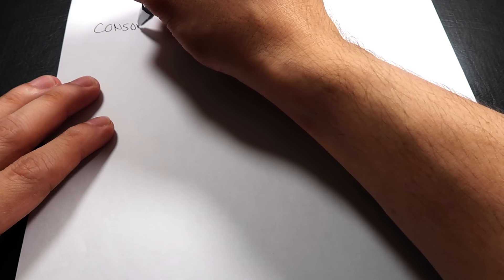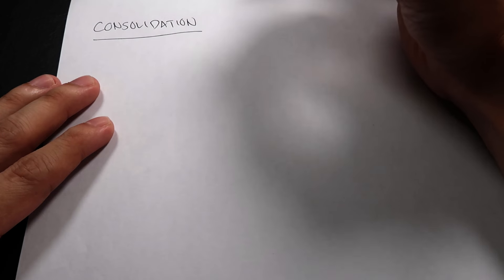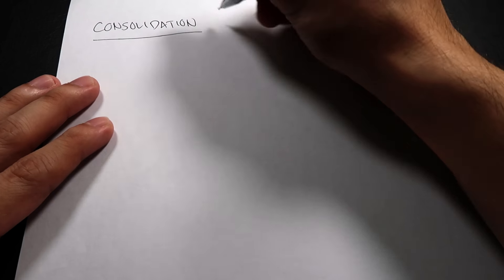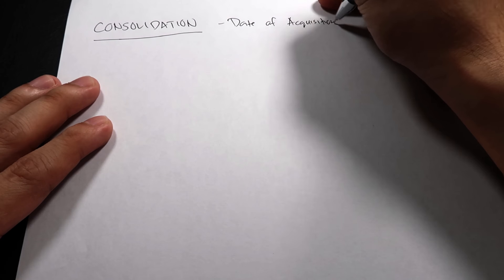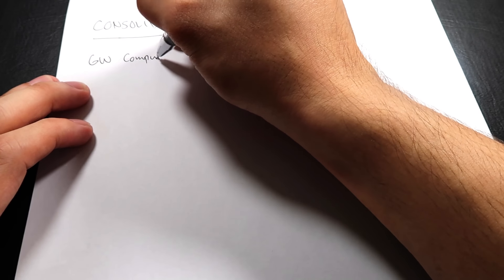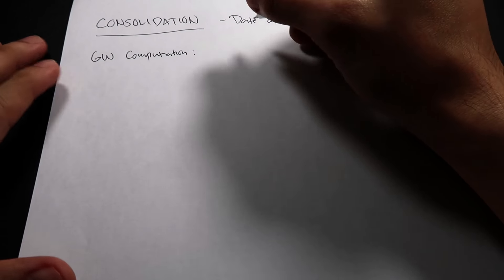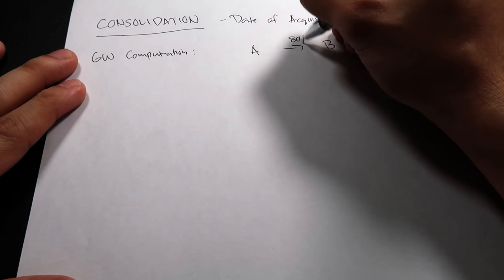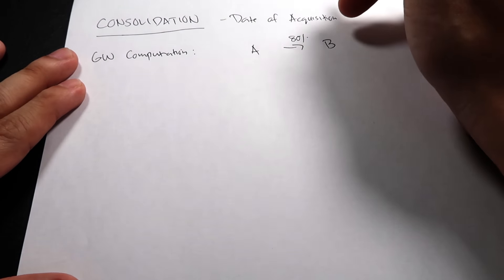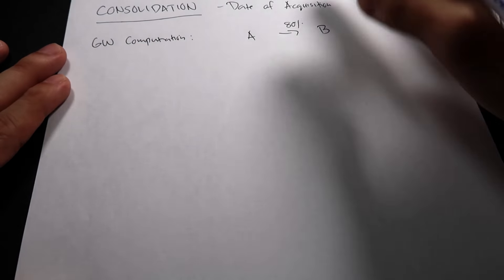Let's discuss consolidation. This is Part 1 of our three-part series. We will focus on the date of acquisition. During the date of acquisition, very important is you have to know how to compute for goodwill. Goodwill computation is from IFRS 3. For the sake of illustration, let's say A acquired 80 percent of B. A is the acquirer, B is the acquiree. A is the parent, B is the subsidiary. So how do we compute for the goodwill?